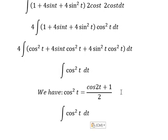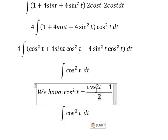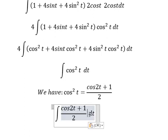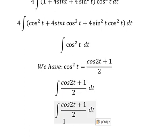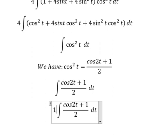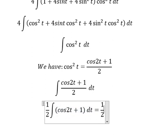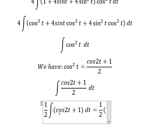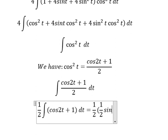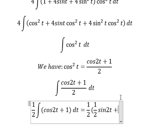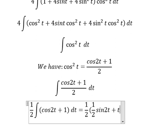We need to transform this expression using the double-angle formula. I will put the two outside. The integration of this gives one-half sin(2T) plus T.